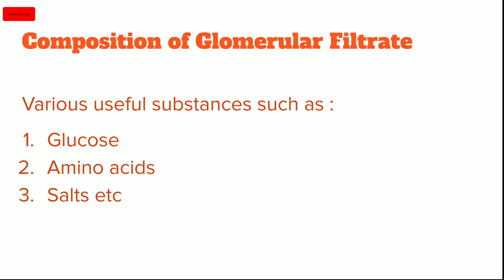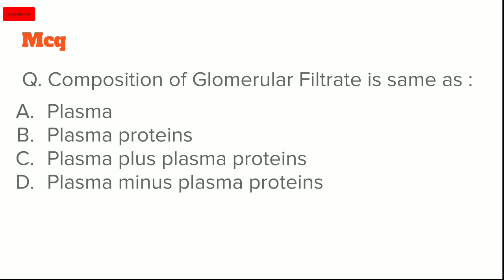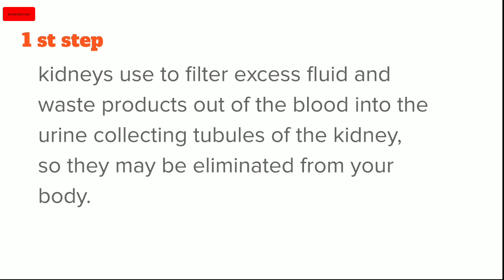The glomerular walls are porous — they have small holes — and the blood pressure is high, which we call filtration pressure. Now an important MCQ: 'The composition of glomerular filtrate is the same as?' The options are: (A) Plasma, (B) Plasma Proteins, (C) Plasma plus Plasma Proteins, (D) Plasma minus Plasma Proteins. Since glucose, amino acids, salts and useful substances are present but plasma proteins are absent, the answer is Delta — Plasma minus Plasma Proteins.